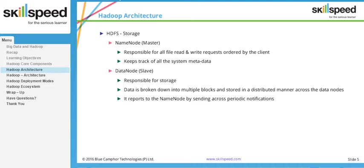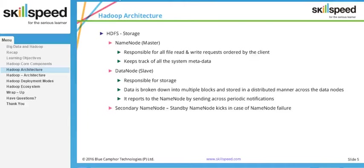You also have a daemon called the Secondary NameNode. The Secondary NameNode is a standby machine, but it is not a hot standby. In case the primary NameNode goes down, the Secondary NameNode can take its place, but manual intervention and configuration is required. The Secondary NameNode is also used for a function called checkpointing, where you periodically take a backup of the whole metadata.